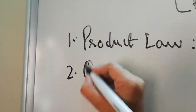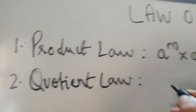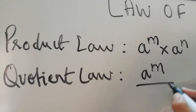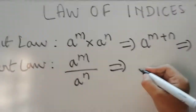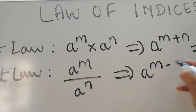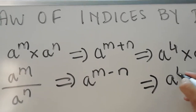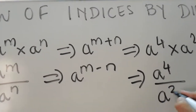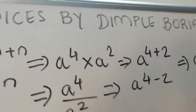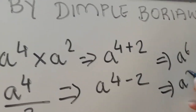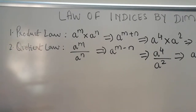The second law is the Quotient Law. Quotient law is in terms of division. The friend of division is subtraction, so it becomes a raised to m minus n. If there is a question like a raised to 4 upon a raised to 2, then the answer will be a raised to 4 minus 2, which is a raised to 2. Are you all clear about product law and quotient law?